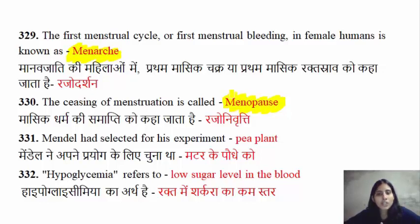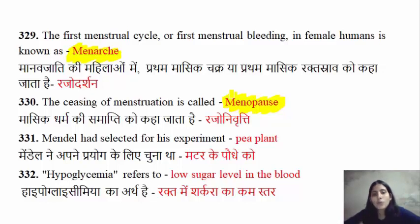Menstruation is the menstrual cycle, which occurs in females.